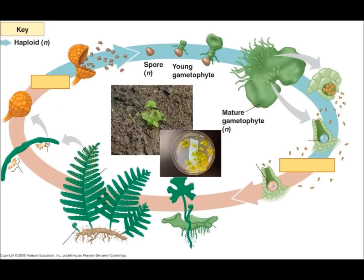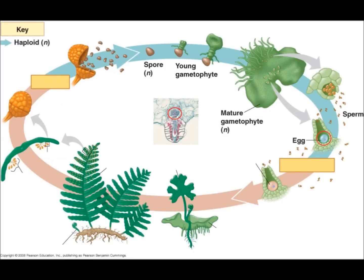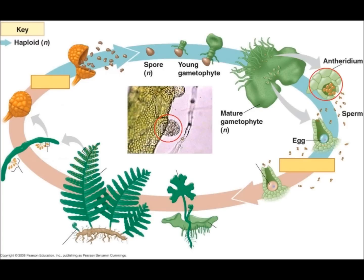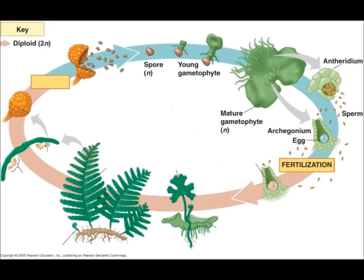As the fern matures, it begins to produce gametes. Male gametes are called sperm, and female gametes are called eggs. The sperm are produced in the antheridia portion, and the eggs are produced in the archegonia. As the gametes mature, the fern prepares to release the male gametes, which must swim in water to meet and fertilize the egg.